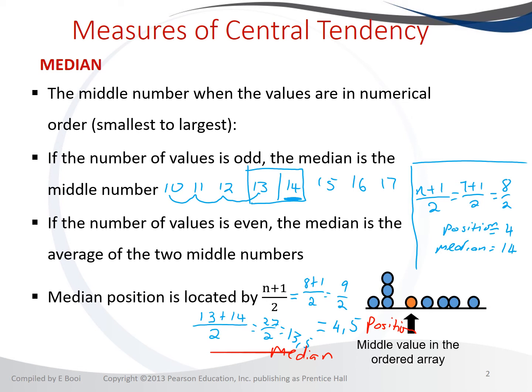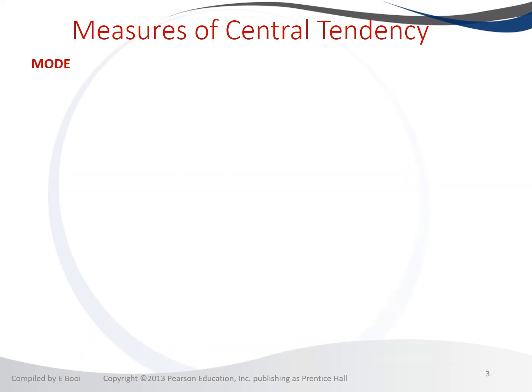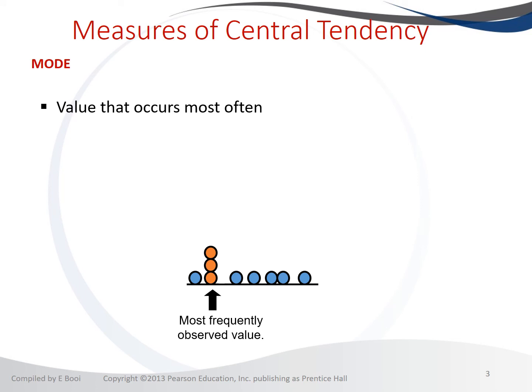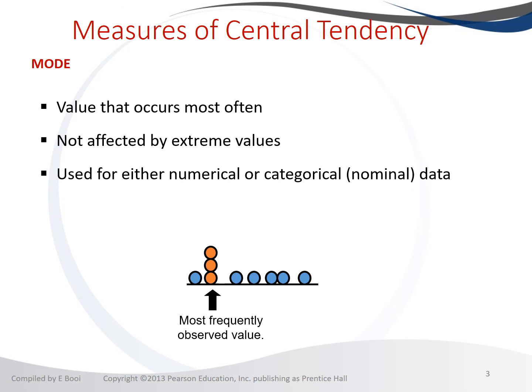The next measure of central location is the mode. The mode is the most frequently appearing number — not the highest or largest, but the number that appears more than the others. The mode is not affected by outliers, because it depends only on frequency. The mode can be calculated for numerical data or for categorical data, where the modal category is the one with the highest frequency or percentage.